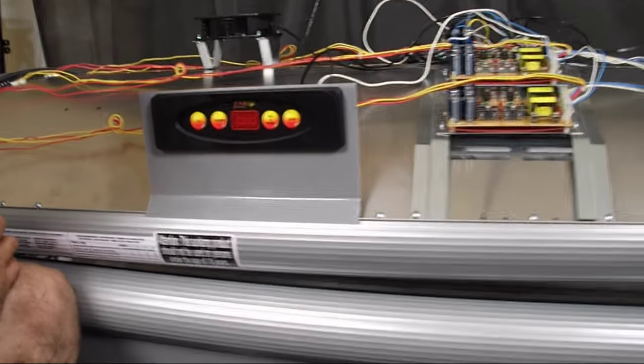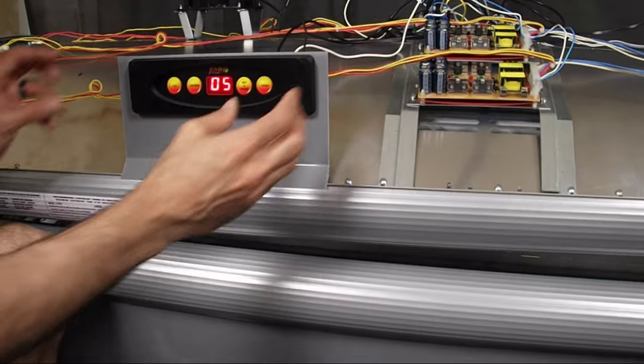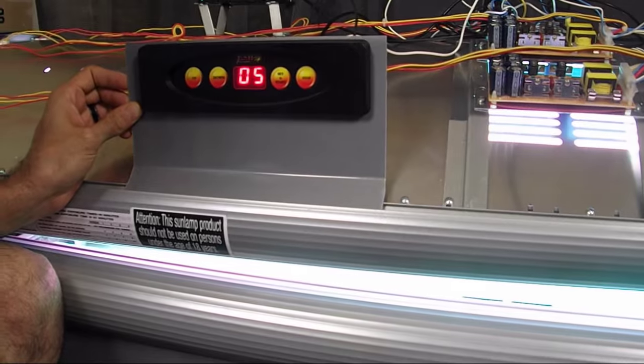Now if you wanted to bypass the pre-start delay mode and just turn the bed on right away, just hit the set and start button one more time and it will turn the bed on. And there it is.